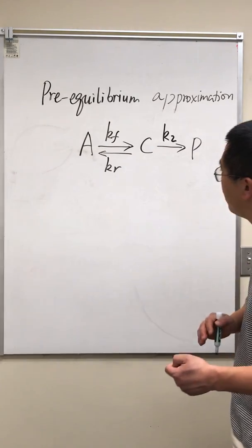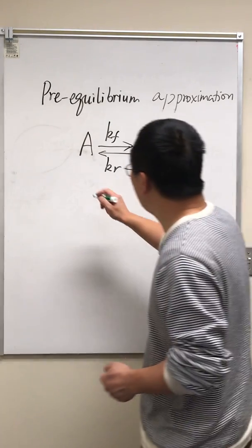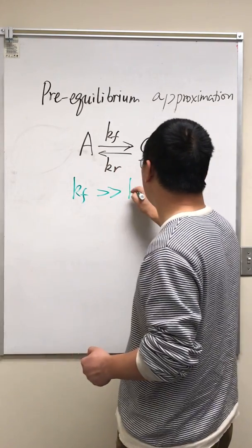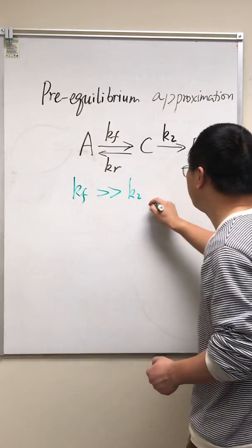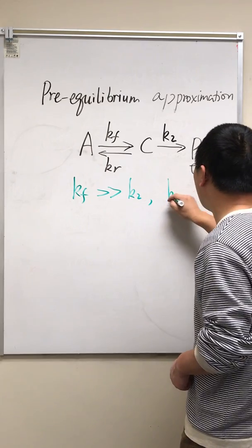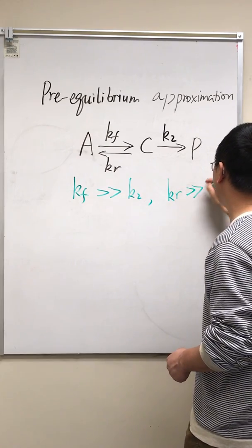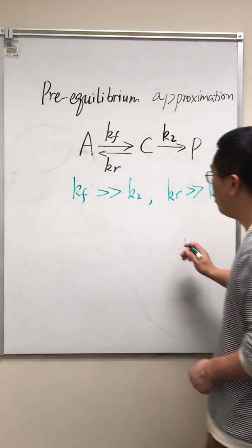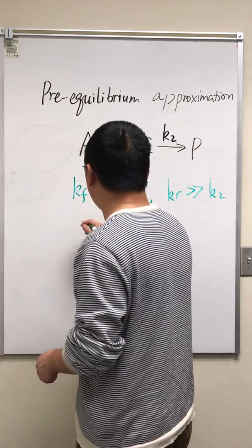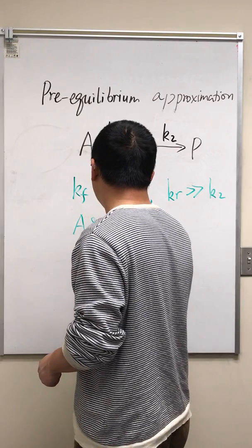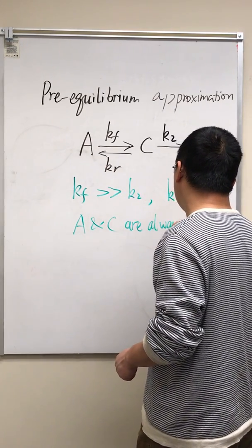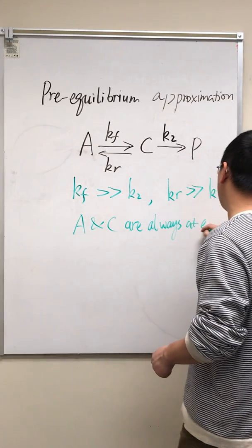This is just to simplify this mechanism. And when Kf is much greater than K2 and Kr is much greater than K2, we assume that A and C are always at equilibrium.